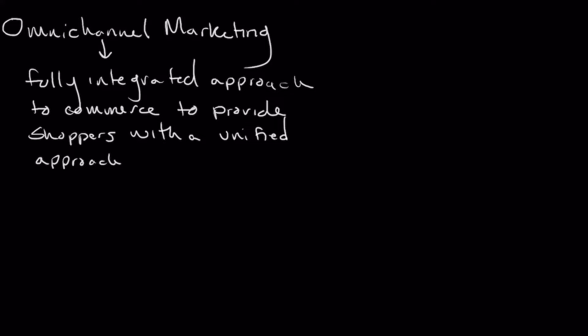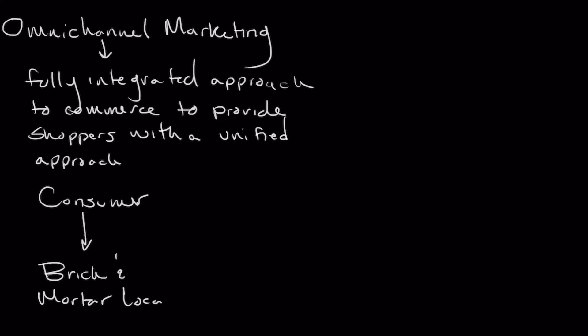Since omnichannel can be a little confusing, let's go through an example of a traditional marketing channel. The traditional marketing channel would involve a consumer going to a brick and mortar — a physical location — purchasing a product, and leaving. That's a single channel. You can also include e-commerce, where the consumer is interacting with a website, but that's still a single channel — just interaction with one particular form.